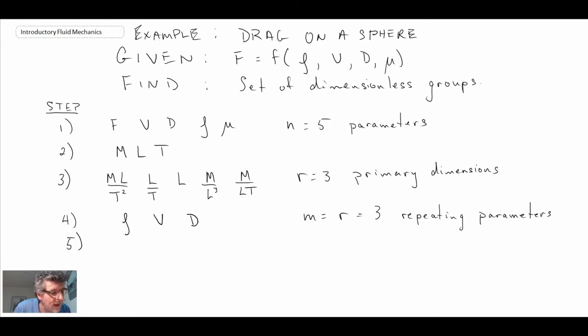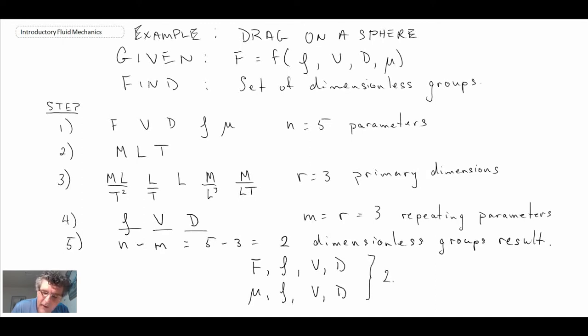Step five is the process of coming up with our dimensionless groups. We have n minus m equals five minus three equals two, so that tells us we should have two dimensionless groups resulting through this process. Each of those is going to consist of rho, V, D, and we combine it with the remaining variables or parameters. One of them is going to have force rho, V, D. And the other one is going to have viscosity rho, V, D. Those are the basis for our two dimensionless groups.